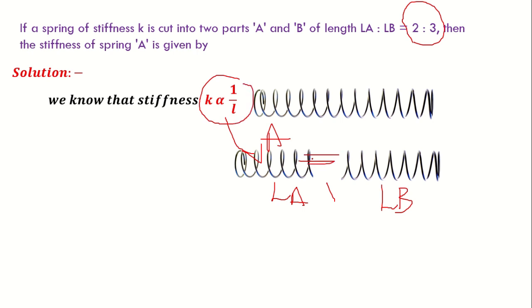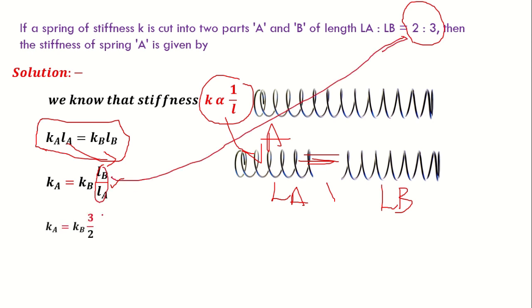Now we are comparing two springs. It means that KA LA equals KB LB. Now if I take this LA to this side, KA equals KB into LB upon LA. We can substitute the ratio of LB upon LA from the given question. So it will become KA equals 3 upon 2 KB. Now I can get KB value from this equation. KB equals 2 by 3 times KA.